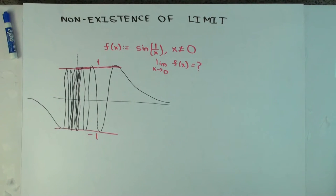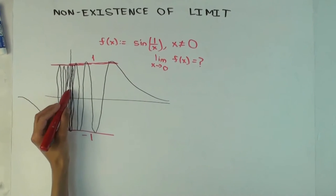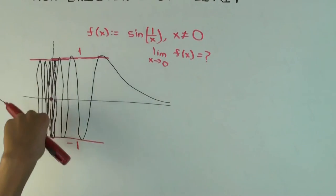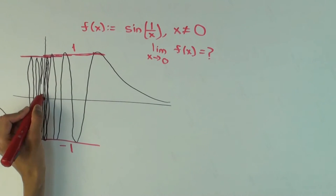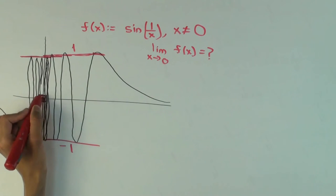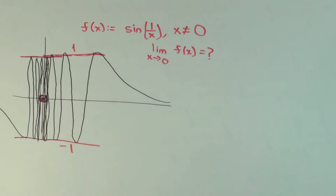So what is the limit at 0 for this function? One might say the limit looks like it's 0. That looks right, because when the x value approaches close to 0, the f(x) value also comes close to 0 — it keeps oscillating between minus 1 and 1. If I take a very small neighborhood of the origin, the function graph is going to enter that repeatedly. So do you think the limit is 0?